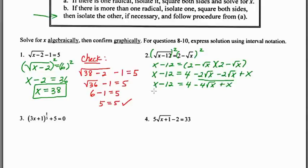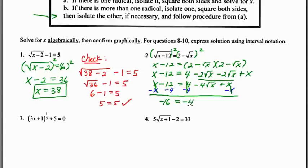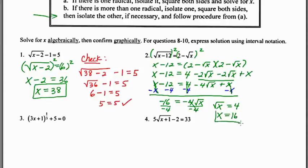Combining like terms: x − 12 = 4 − 4√x + x. I'll clean this up by subtracting x from both sides and subtracting 4 from both sides, which leaves −16 = −4√x. Dividing both sides by −4 gives √x = 4, and squaring both sides gives x = 16.